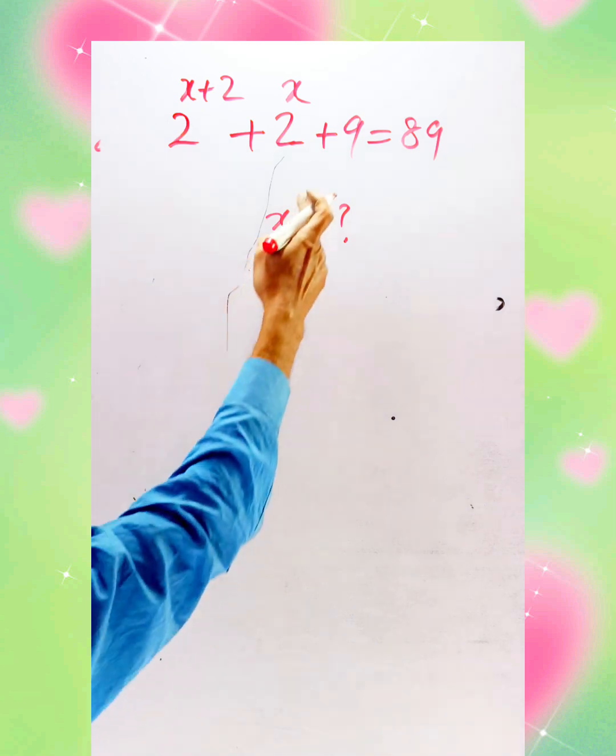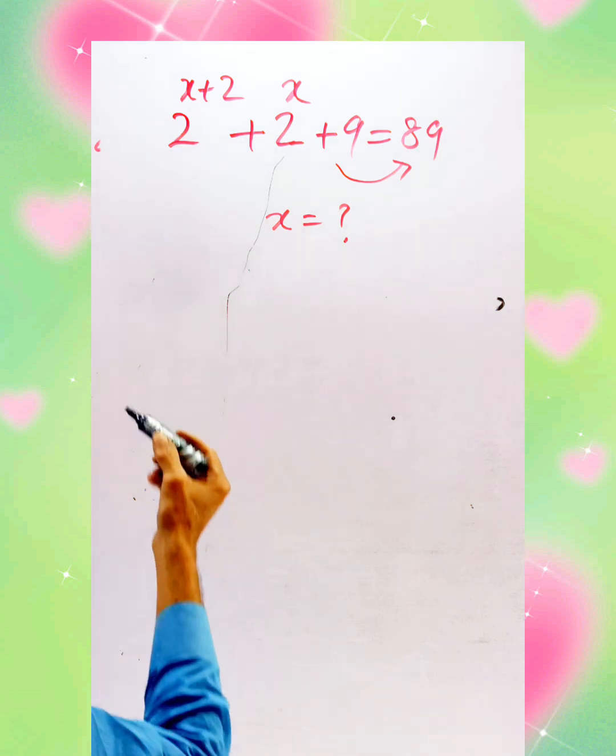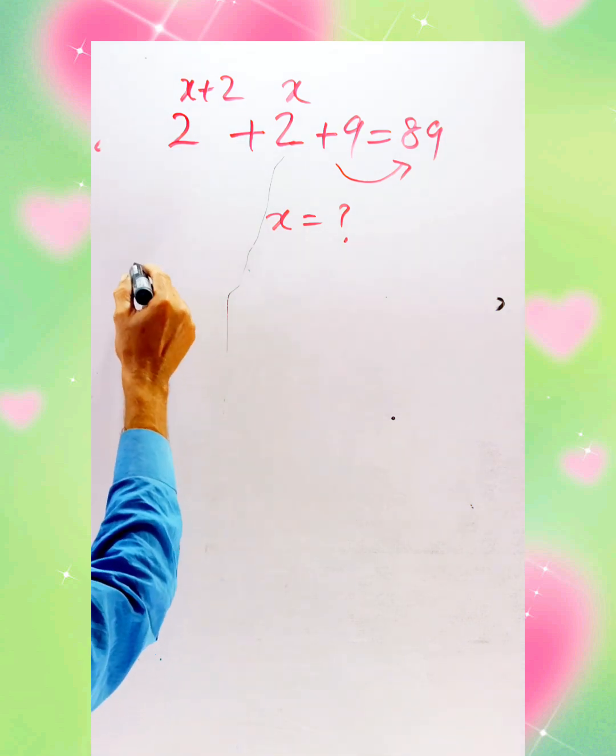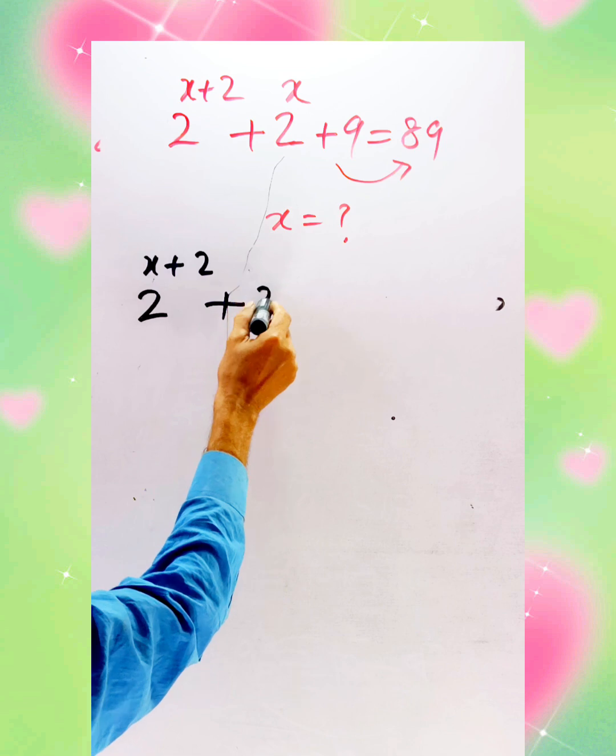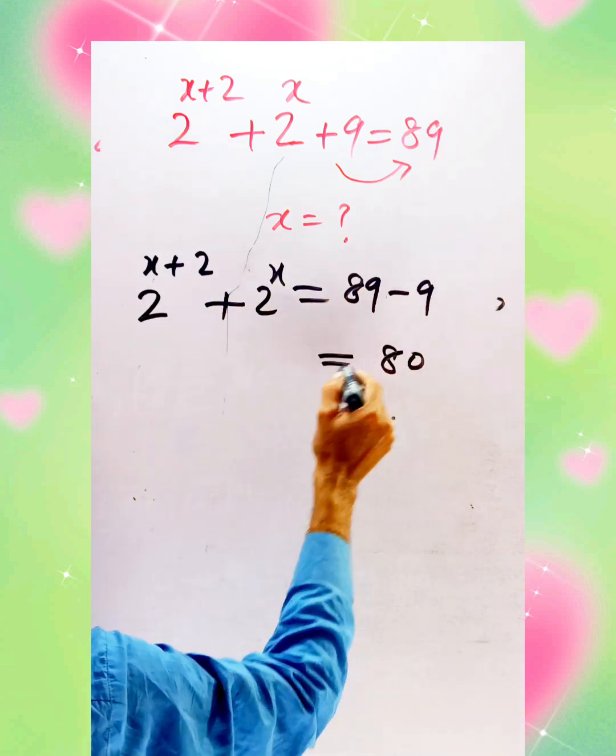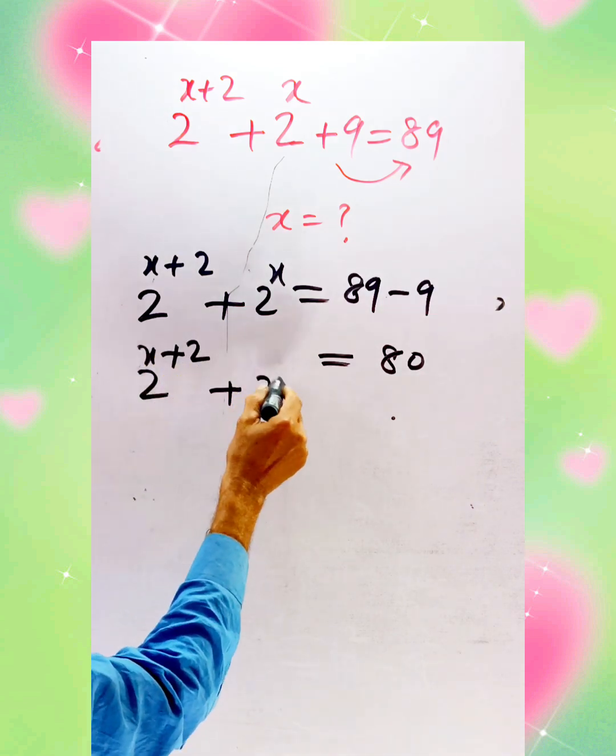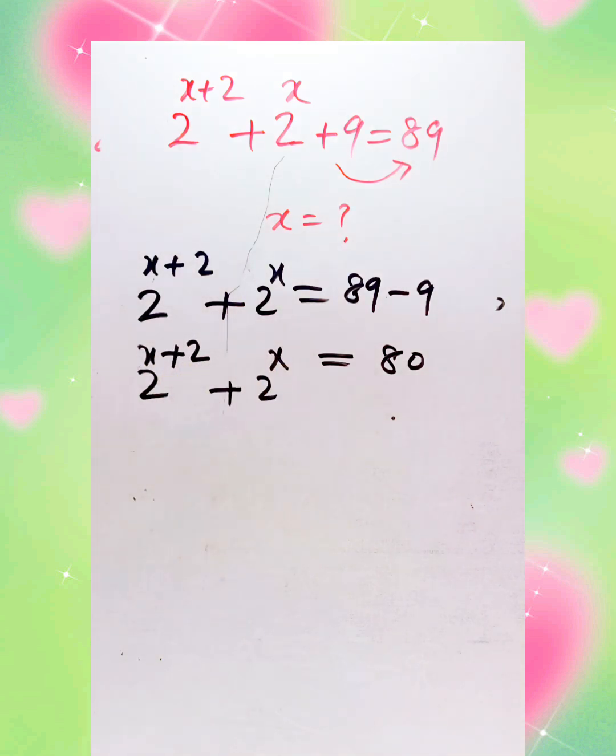In this type of question, first we check the constant value and transform to the right side, so the sign is changed. 2^(x+2) + 2^x = 89 - 9. We get 80: 2^(x+2) + 2^x = 80.